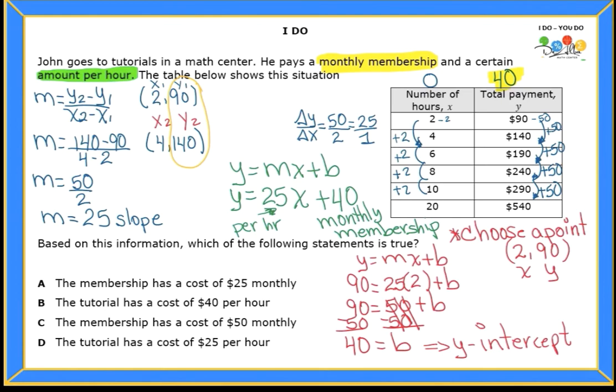Notice how 40, we had already seen it before. And we saw it earlier when I did the table. So when X was zero, that was my monthly membership. What about 25? Well, 25 was the slope. And that's actually how much money you pay per hour. Very good.